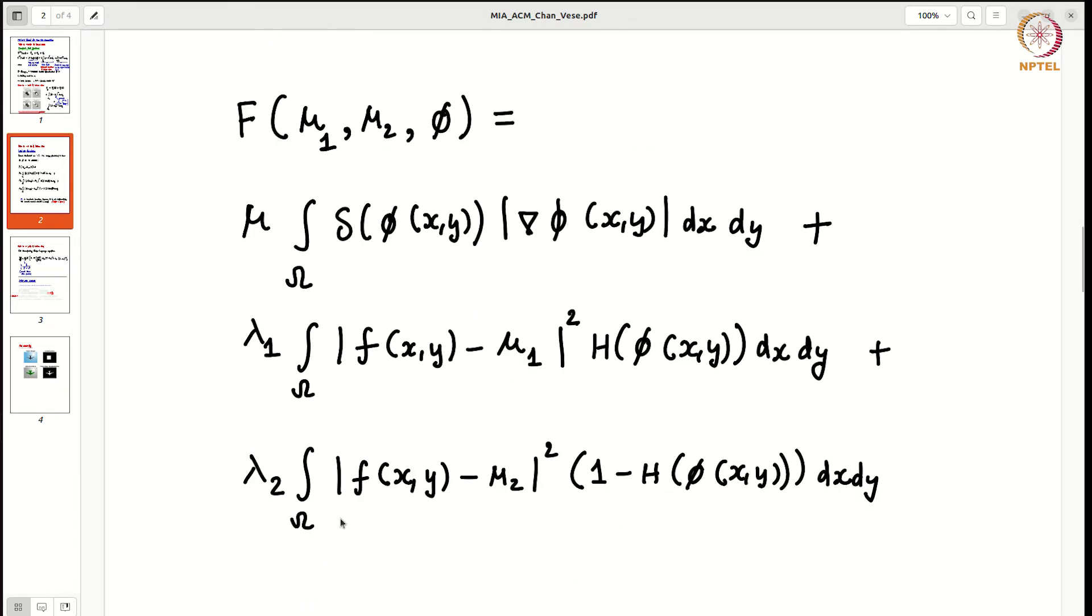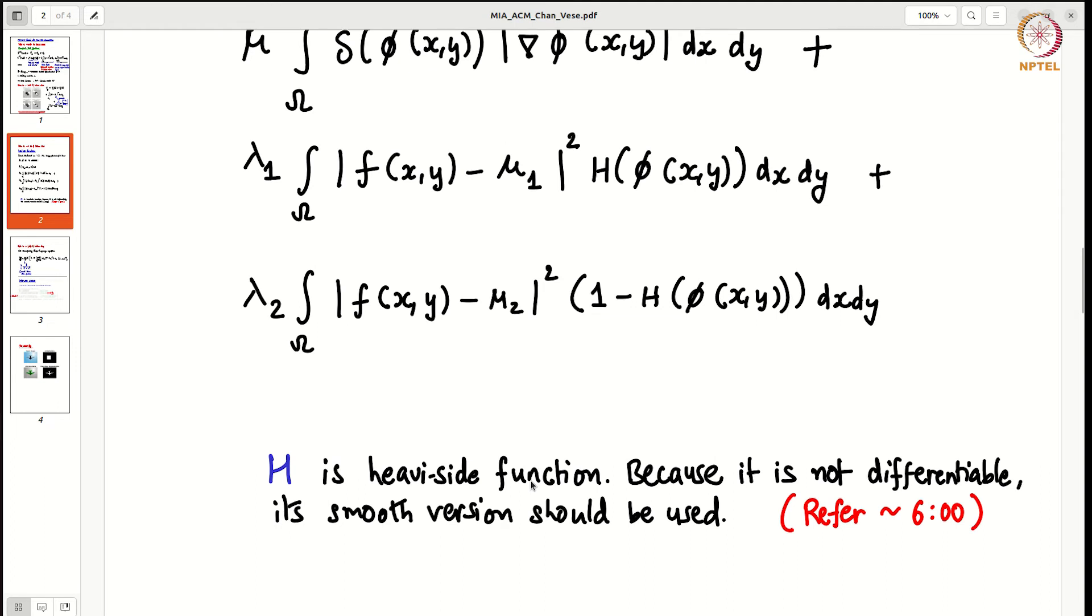With the representation picture we have already seen, F is actual image, mu 1 is the average and all. Here capital H is the Heaviside function. And because it is not differentiable, a smooth version is used.